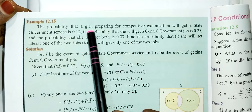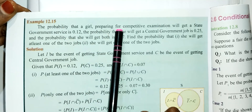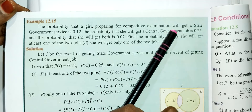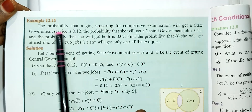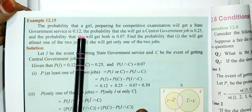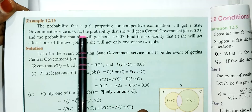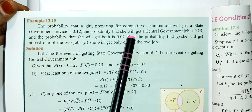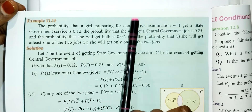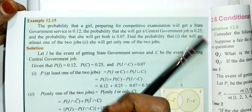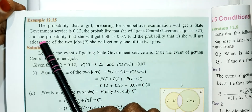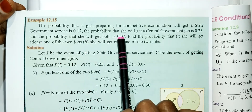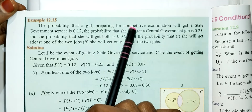The probability that a girl preparing for a competitive examination will get a state government service is 0.12. The probability that she will get a central government job is 0.25. The probability she will get both is 0.07.